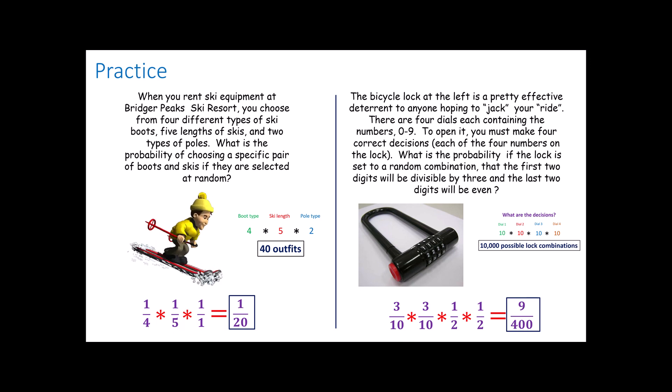The probability of having two digits divisible by three followed by two digits that are even is nine out of four hundred. Now this is a simplified fraction. If I had left this three out of ten, three out of ten, five out of ten, five out of ten, the denominator would have been ten thousand, and I believe the top would have been 225. 225 out of ten thousand is going to give you nine over four hundred.